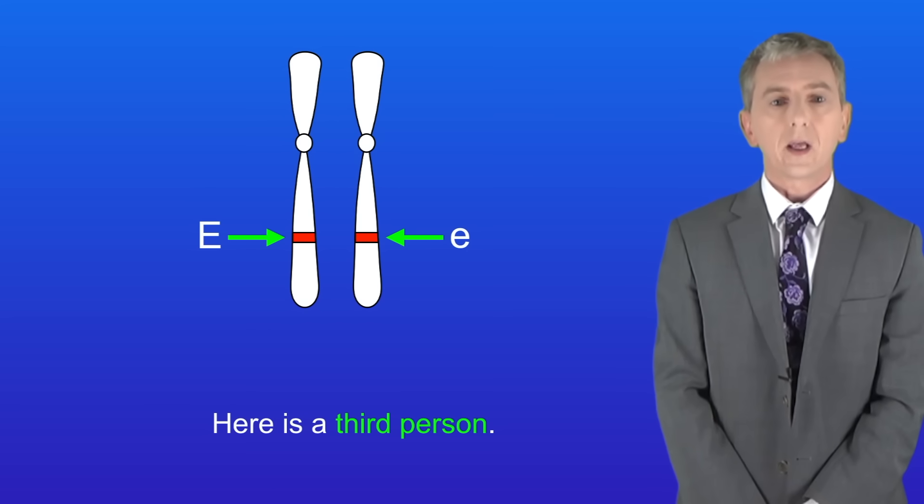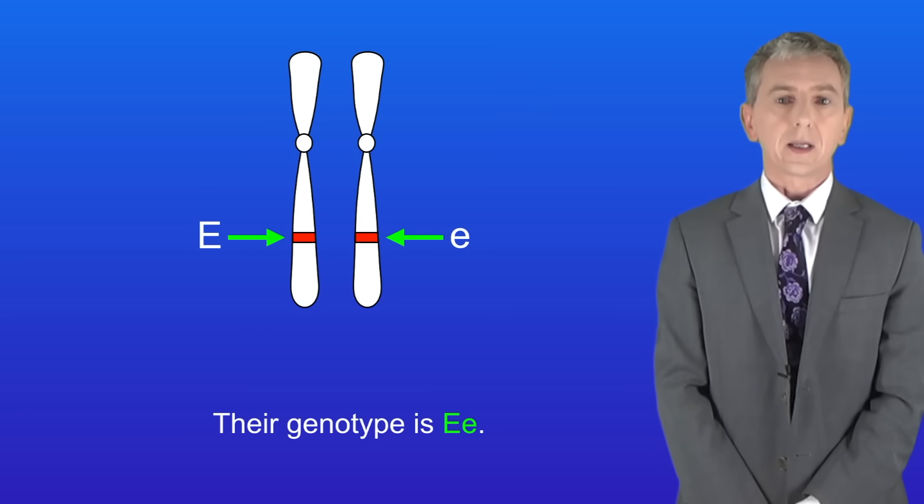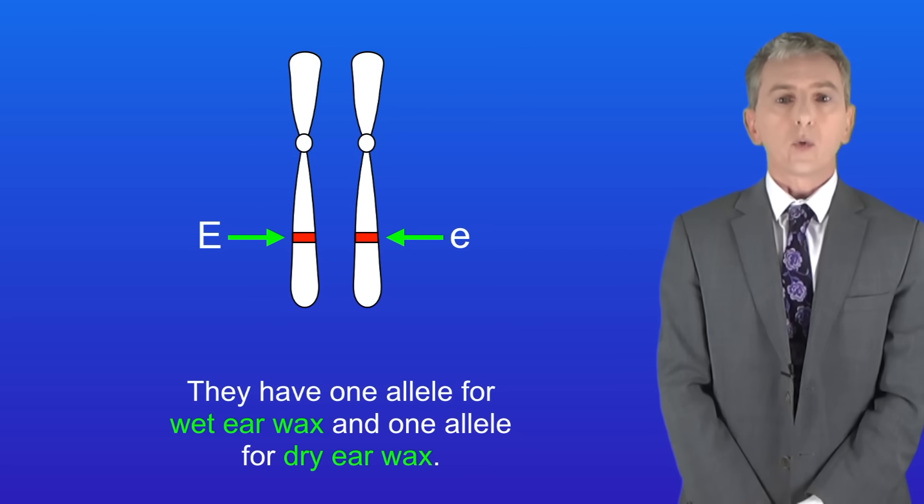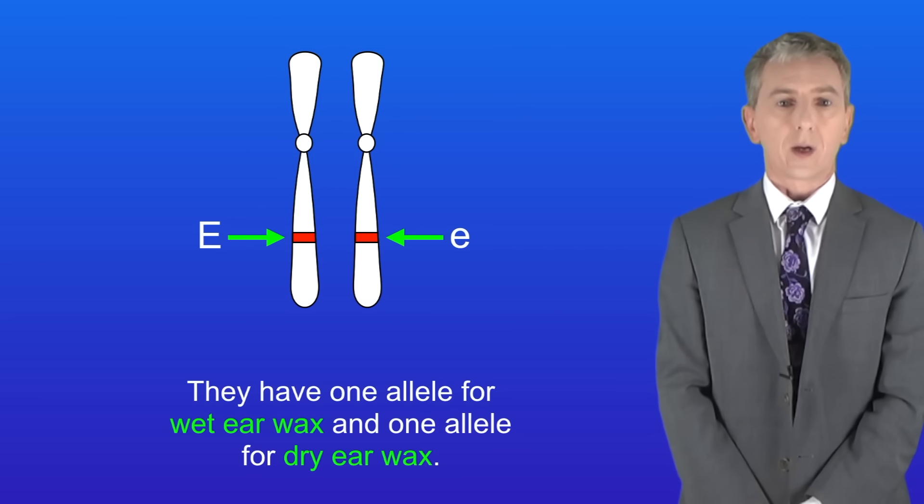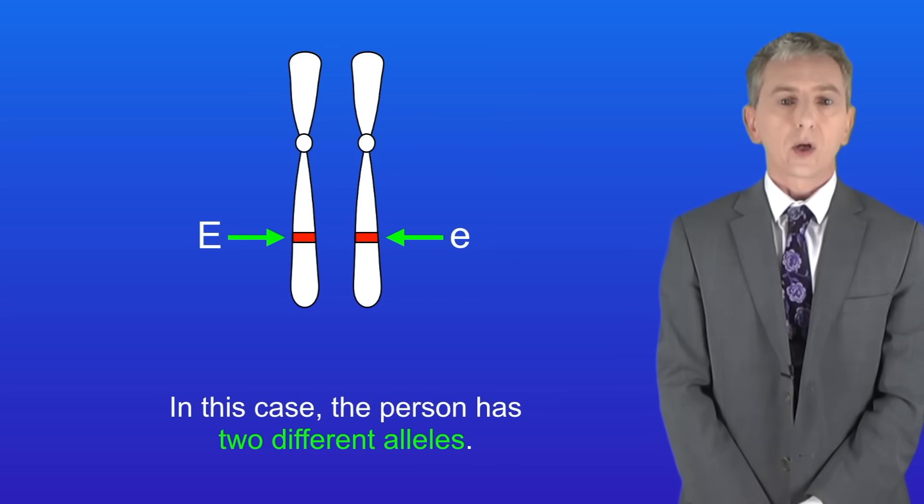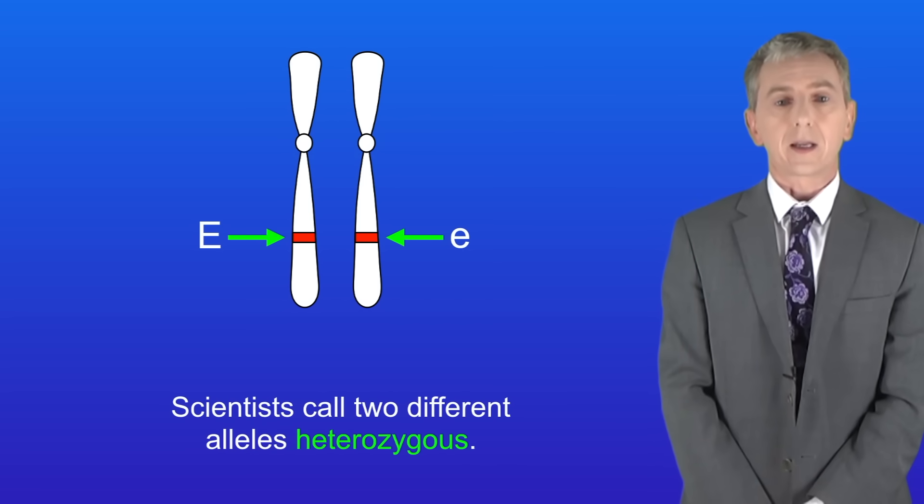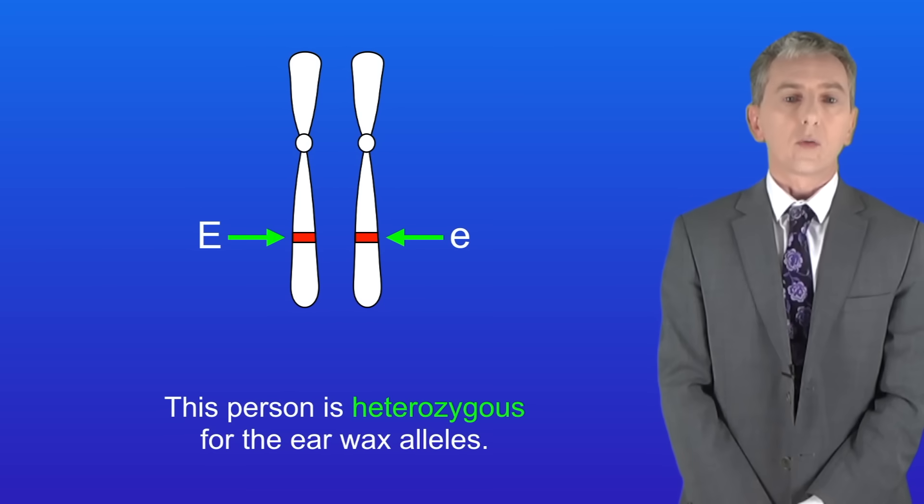Here's a third person. Their genotype is capital E lowercase e. In other words, they've got one allele for wet earwax and one allele for dry earwax. Now in this case the person has two different alleles. Scientists call two different alleles heterozygous. So this person is heterozygous for the earwax alleles.